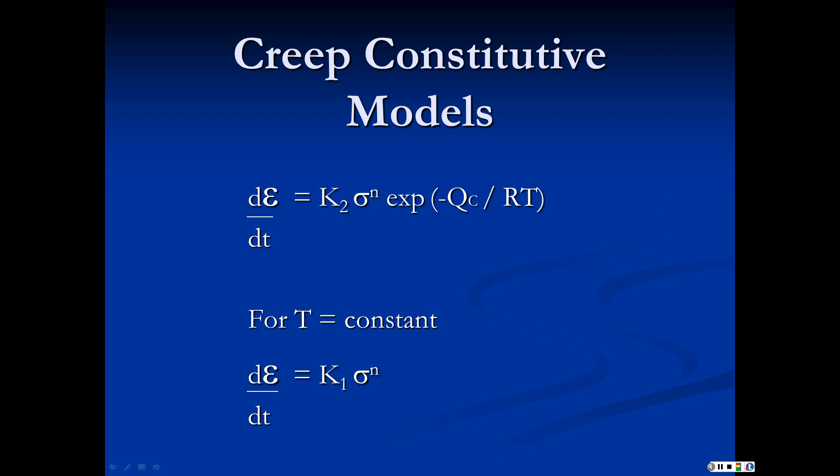If temperature is constant at the temperature you're going to be operating, then the model simplifies. Your velocity is simply a different pre-exponential k1 times sigma to the n. In class, we're going to look at how we find these missing constants. You should look at this and see we're going to take the natural log on both sides. That gives me ln k2 plus n ln sigma minus qc over RT. That's a linear equation in three unknowns - do three experiments, plug and chug. We'll use this equation in the lecture.